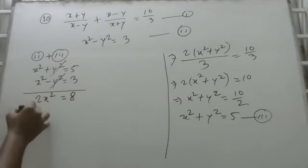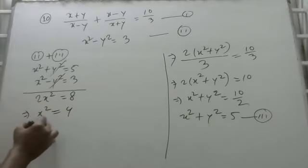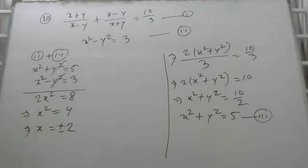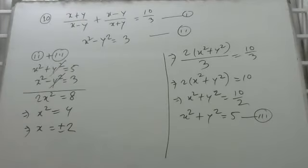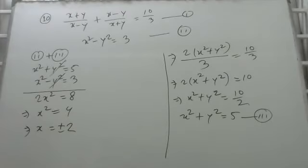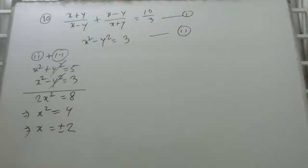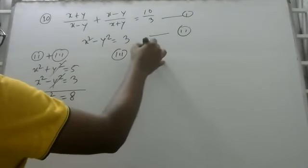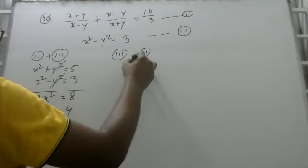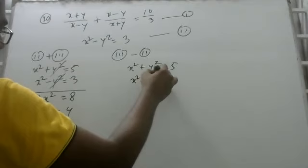2 into (x squared plus y squared) is equal to 5. So x squared is equal to 4, and x equals plus or minus 2.